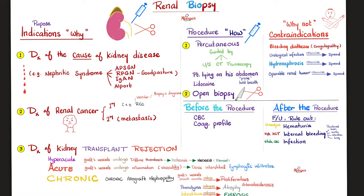Under the microscope, hyperacute rejection will show that the kidney's vessels have diffuse thrombosis, leading to ischemia and death of the kidney — fibrinoid necrosis — because of the immunological vascular disease. In acute rejection, there is inflammation, i.e. vasculitis, with dense interstitial lymphocytic infiltrates, so we see lymphocytes. As for chronic allograft nephropathy, which takes a long time, the graft vessels will have proliferation of their smooth muscles, as well as arteriolosclerosis. The parenchyma of the kidney will show atrophy, and the interstitial tissue will show fibrosis, because it's chronic.